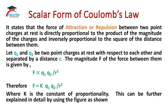Let us consider two charges Q1 and Q2 — two point charges which are at rest with respect to each other, separated by a distance r. Then the magnitude F, that is the force between them, is mathematically directly proportional to Q1 and Q2, and inversely proportional to r². Therefore, F = K × Q1 × Q2 / r², where K is the constant of proportionality. This can be further explained using the figure as shown.